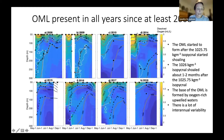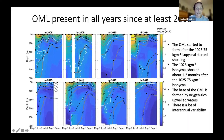Looking at the isopycnals — 2008 is a good example — when the sigma-t 1025.75 isopycnal shoals, that normally indicates upwelling within the inlet, and that's around the same timing as when we see this oxygen minimum layer start to form. When the sigma-t 1026 isopycnal starts to appear about a month or two later, we see an increase in oxygen — that's when the base of the oxygen minimum layer forms as that higher-oxygen water upwells. Before the OML forms, there's often very low oxygen in the deep water of the inlet, which we believe results from remineralization through the winter months, but that's distinct from the seasonally-formed OML we see developing in the summer.